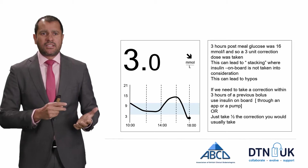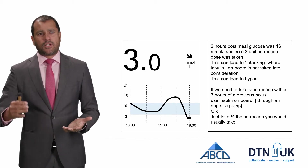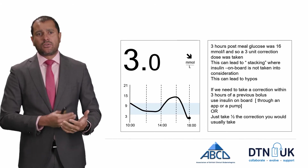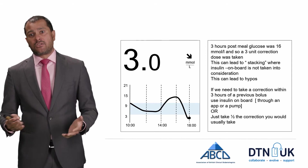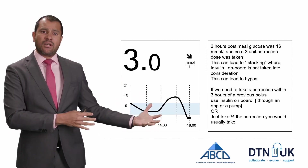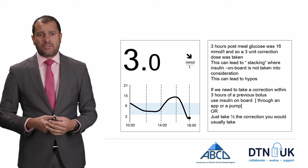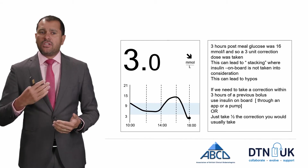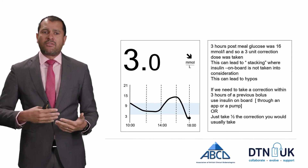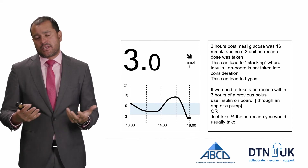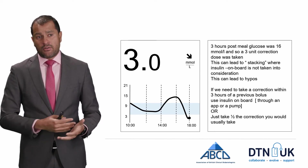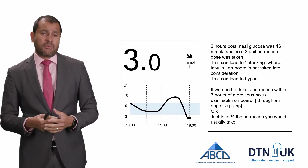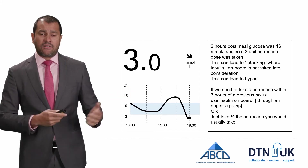Another common scenario is getting a hypo about three hours post-meal: blood glucose was high, an extra correction dose was taken, but that correction didn't account for the amount of insulin already on board from the meal. This is called stacking and can lead to hypos. With a Libre, if you've scanned when your glucose is high and taken a correction, you need to account for insulin on board — if you're within four hours of any previous injection, consider taking only half your usual correction dose. More on this is covered in the video on arrows.